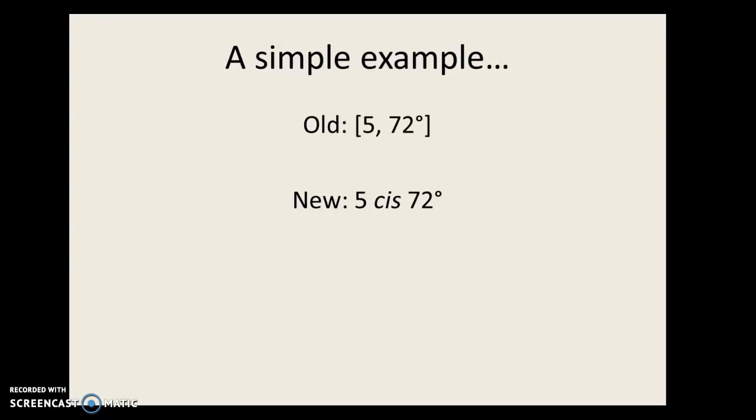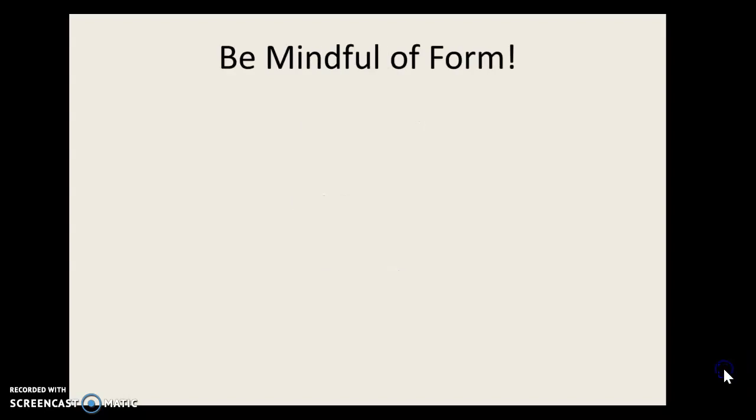Except your textbook, for reasons I don't fully understand, decides to take a really simple idea and make it more complicated. So they will actually write something in cis form, but they will completely write out the cosine 72 and the 5 times sine 72 and they'll have an i there at the end. So when you're working in your textbook and you see something that looks like this, just understand that they really mean this. But we should use cis notation. That is better. Don't do what the textbook does.